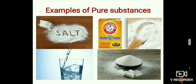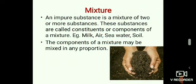Whereas soil, which contains particles of different kinds, is called an impure substance or mixture. We can now define a mixture. An impure substance is a mixture of two or more substances. These substances are called constituents or components of a mixture. Examples of mixtures are milk, air, sea water, and soil. The components of a mixture may be mixed in any proportion.